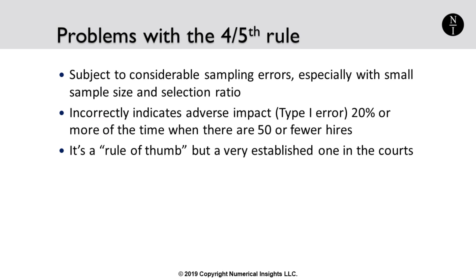The four-fifths rule has been a long-time rule of thumb, especially when arguing bias in a courtroom, but it has a few problems. When sample sizes are small, such as in the example we just completed, it can be subject to large sampling errors. Dealing with hiring data can also be tricky, since many candidates choose not to identify characteristics such as ethnicity, gender, and age. This method will incorrectly show adverse impact 20% of the time when there are 50 or fewer hires. However, it's a widely accepted test since it's simple to calculate and requires no knowledge of statistics.